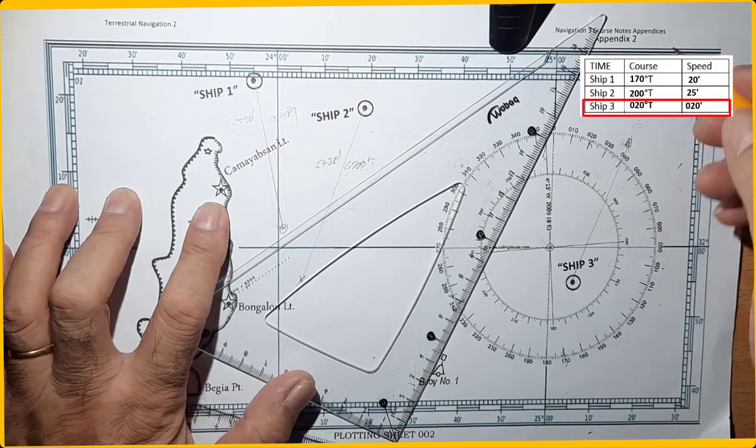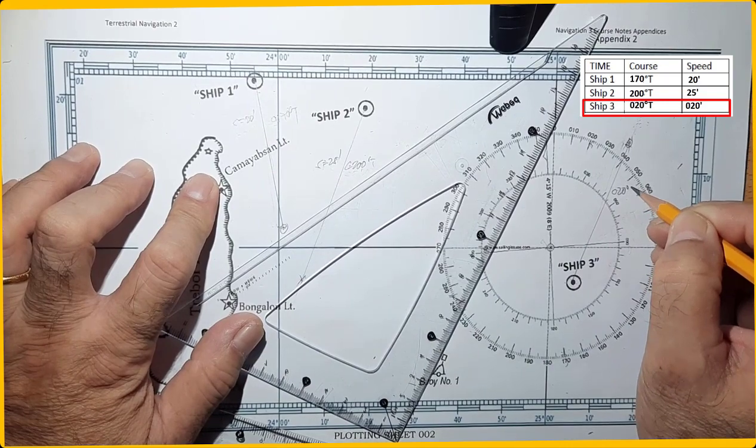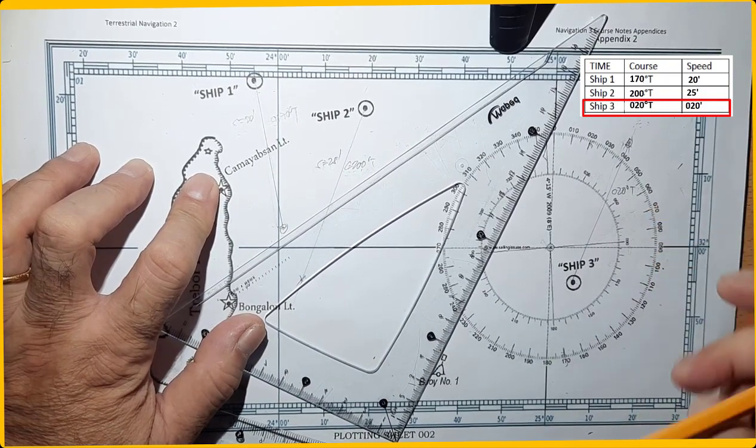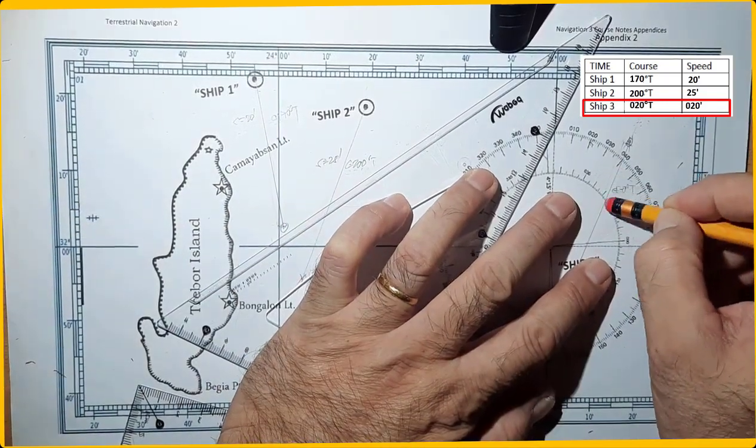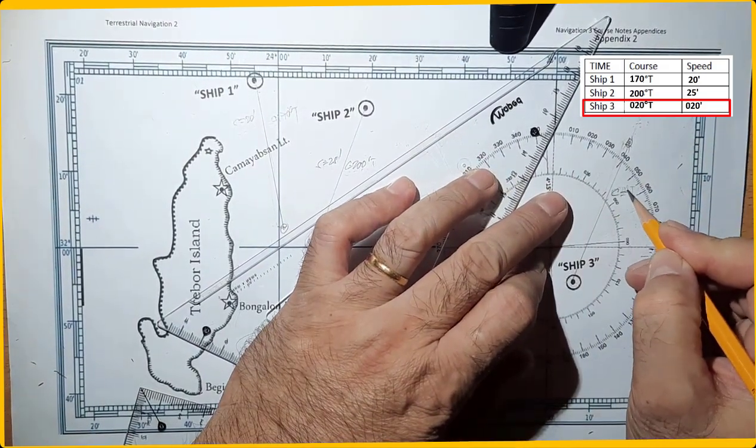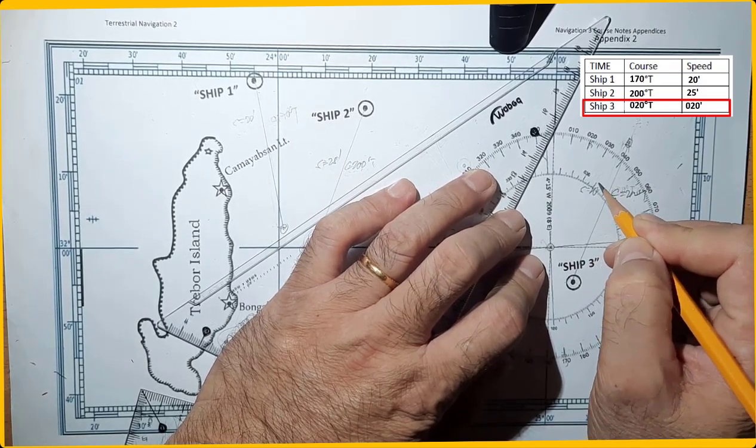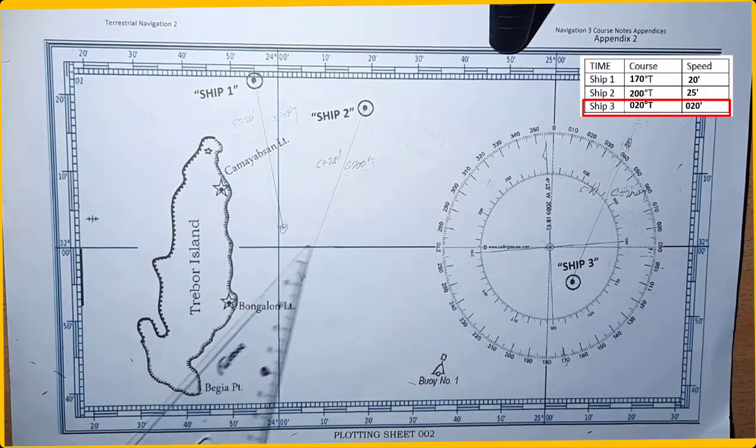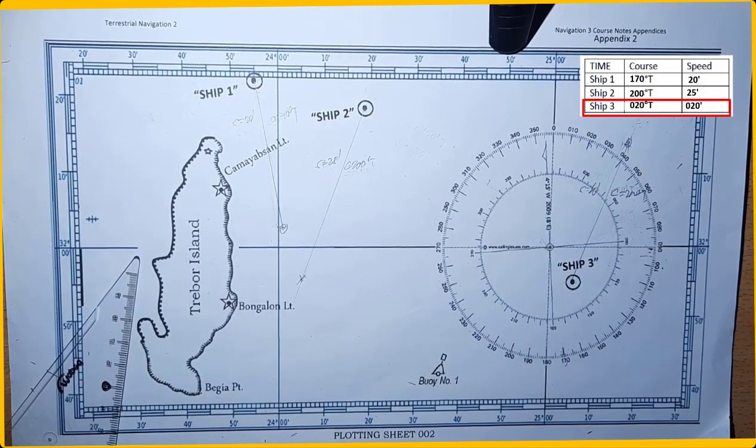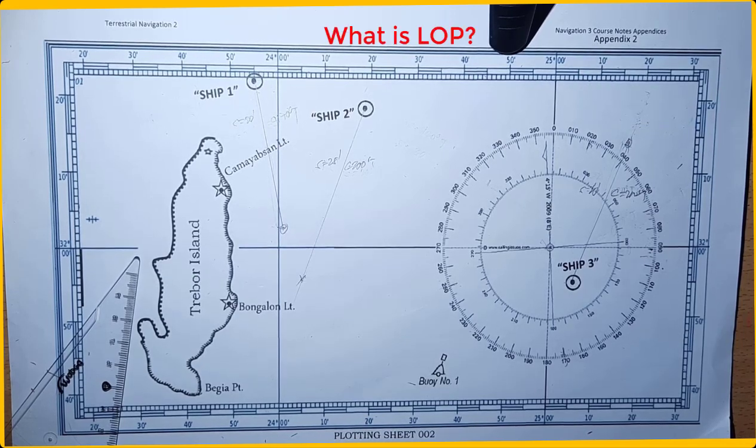And that's it. You can now label 020 degrees true. It's course 020 degrees true and speed equals 20. That's always very easy to lay down the course line and the speed line. That's very important. So next, we will study what is lop.